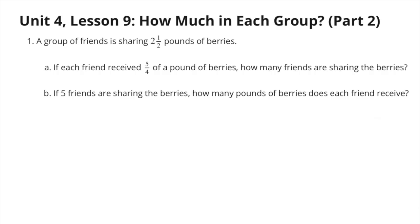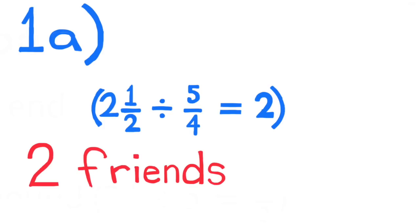Number 1. A group of friends is sharing 2 and a half pounds of berries. A. If each friend received 5 fourths of a pound of berries, how many friends are sharing the berries? Two friends would be sharing the berries. 2 and a half divided by 5 fourths equals 2.